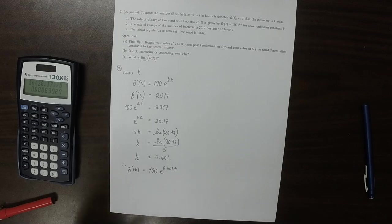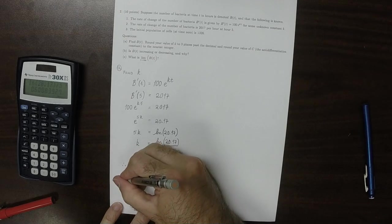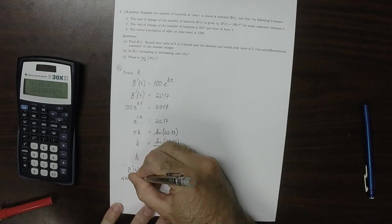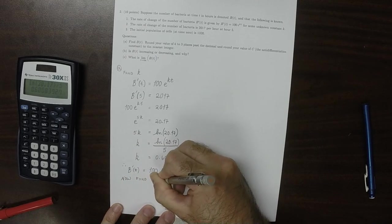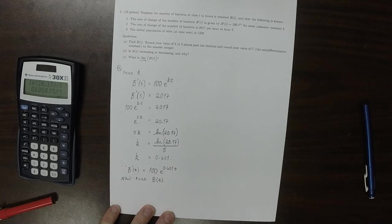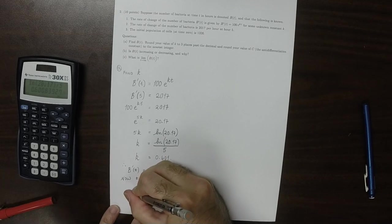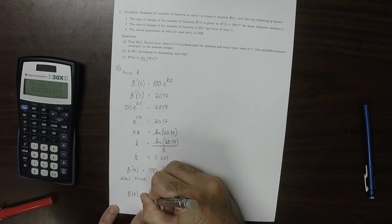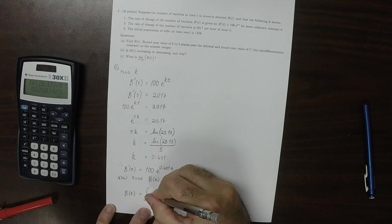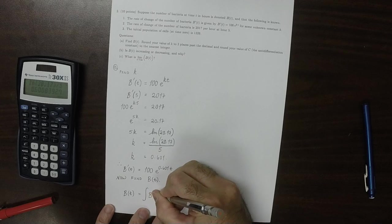Therefore, we've now established that the derivative of b evaluated at t is 100 exponential of 0.601t. And so now, now we can find b(t).